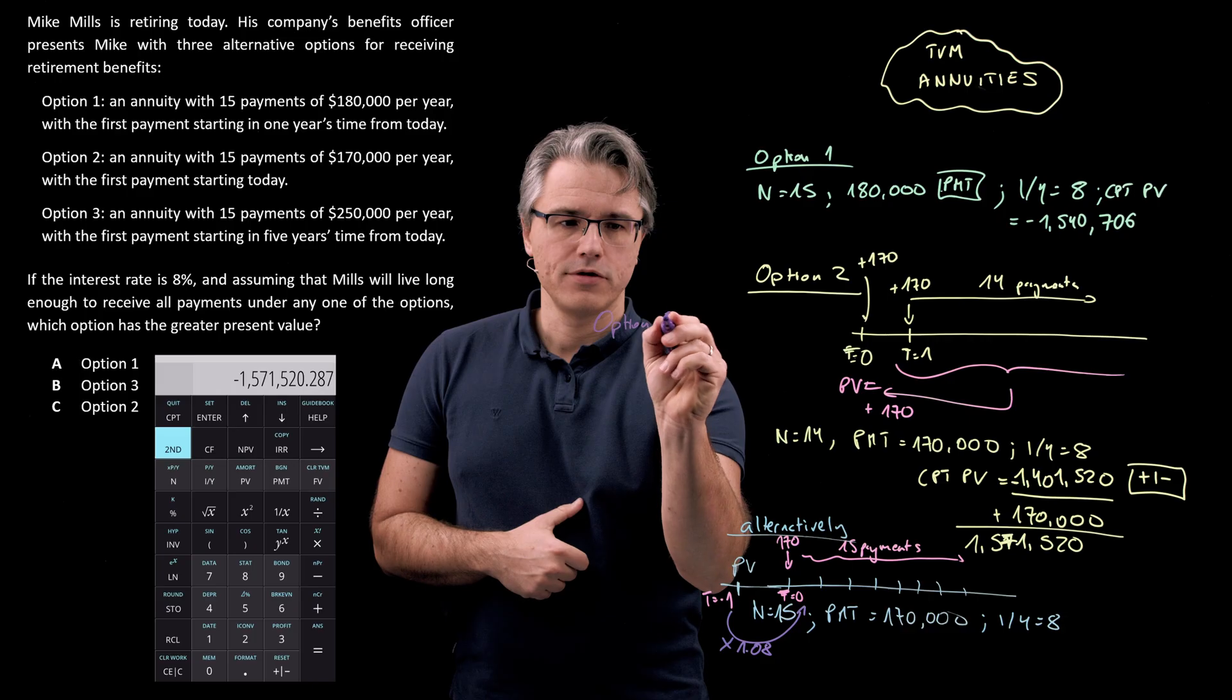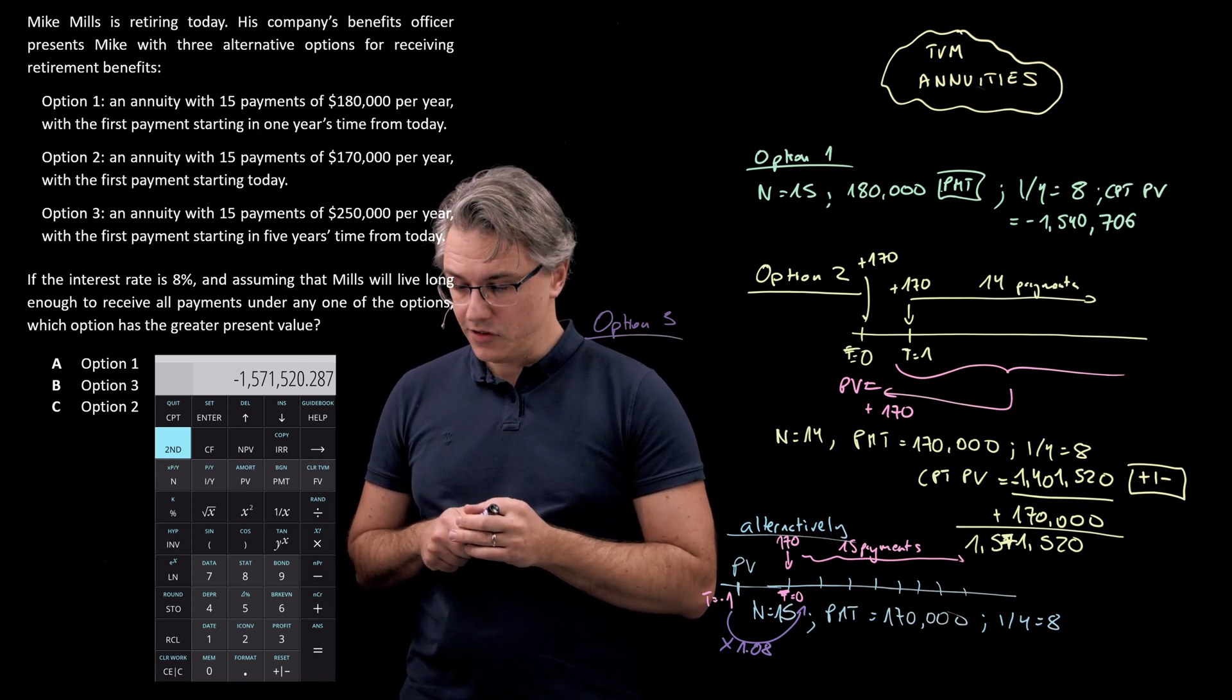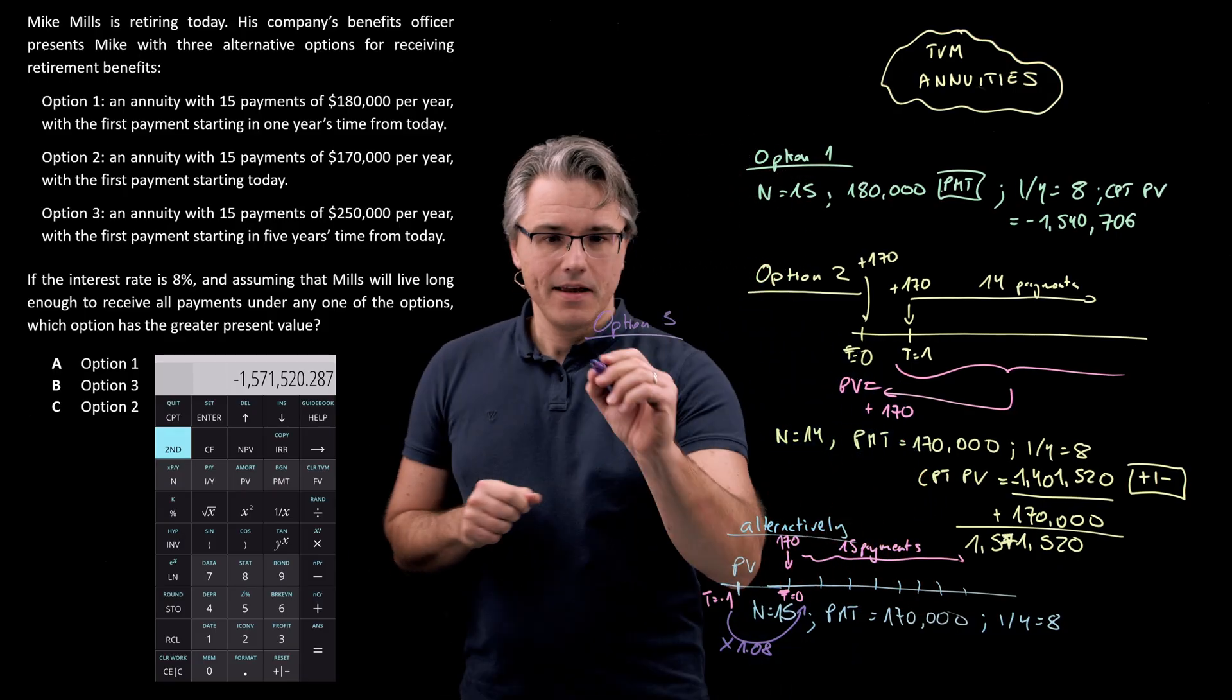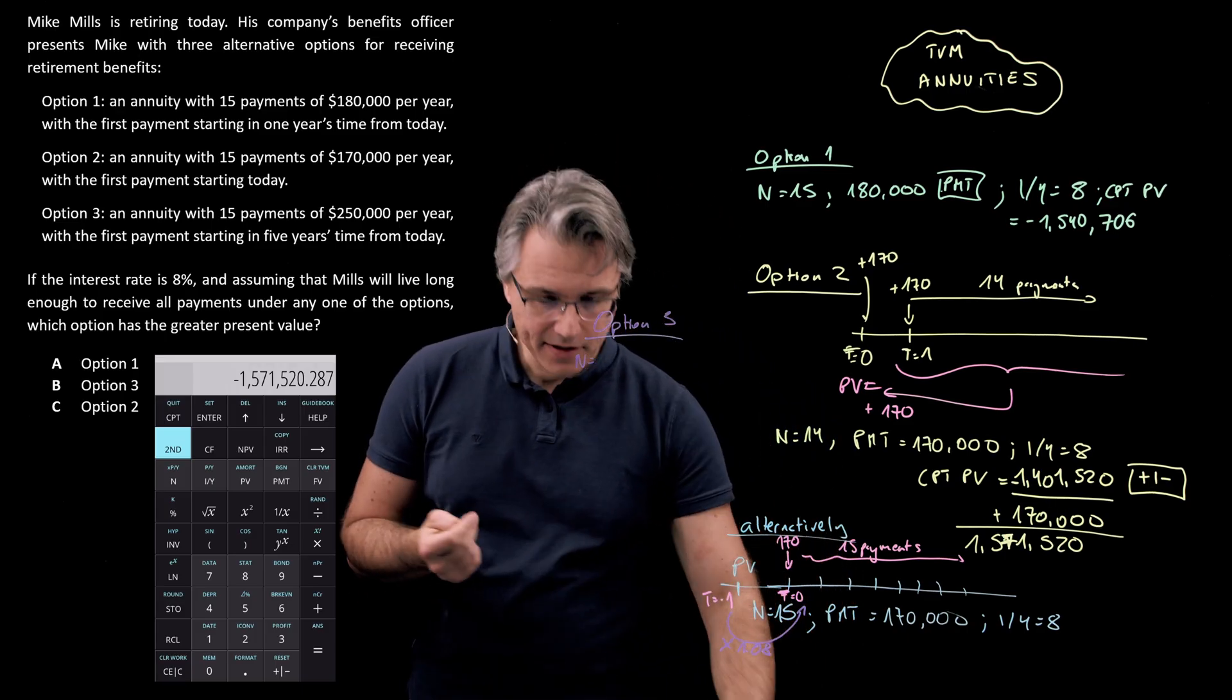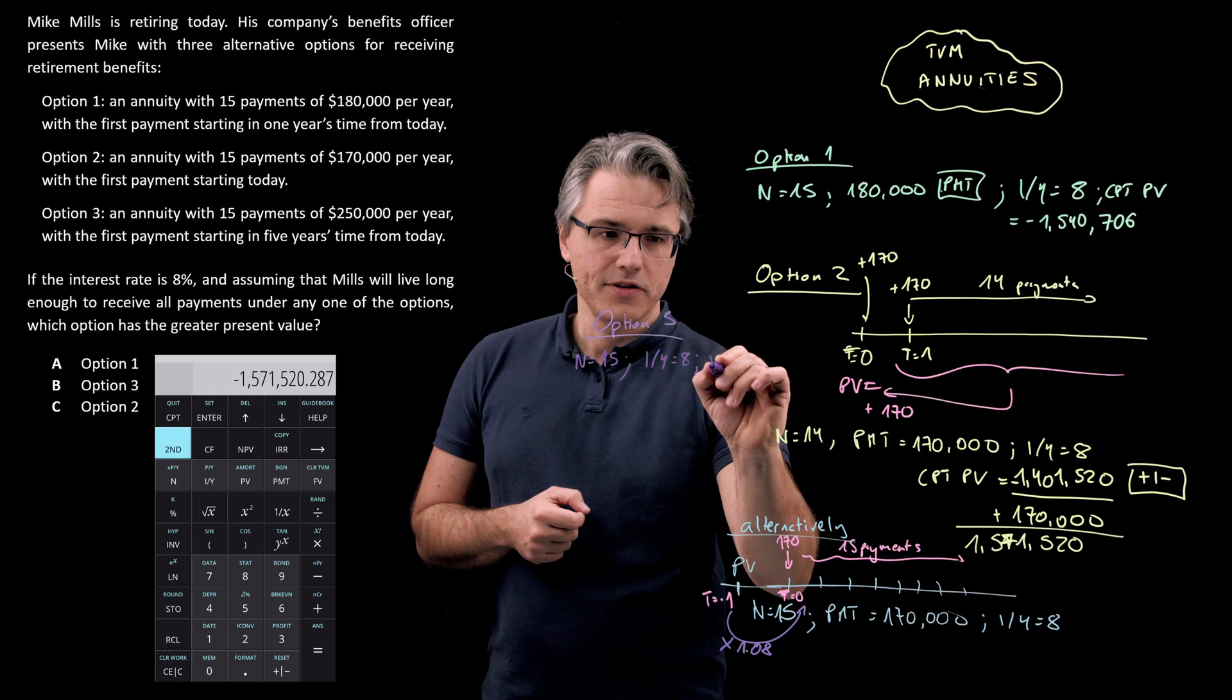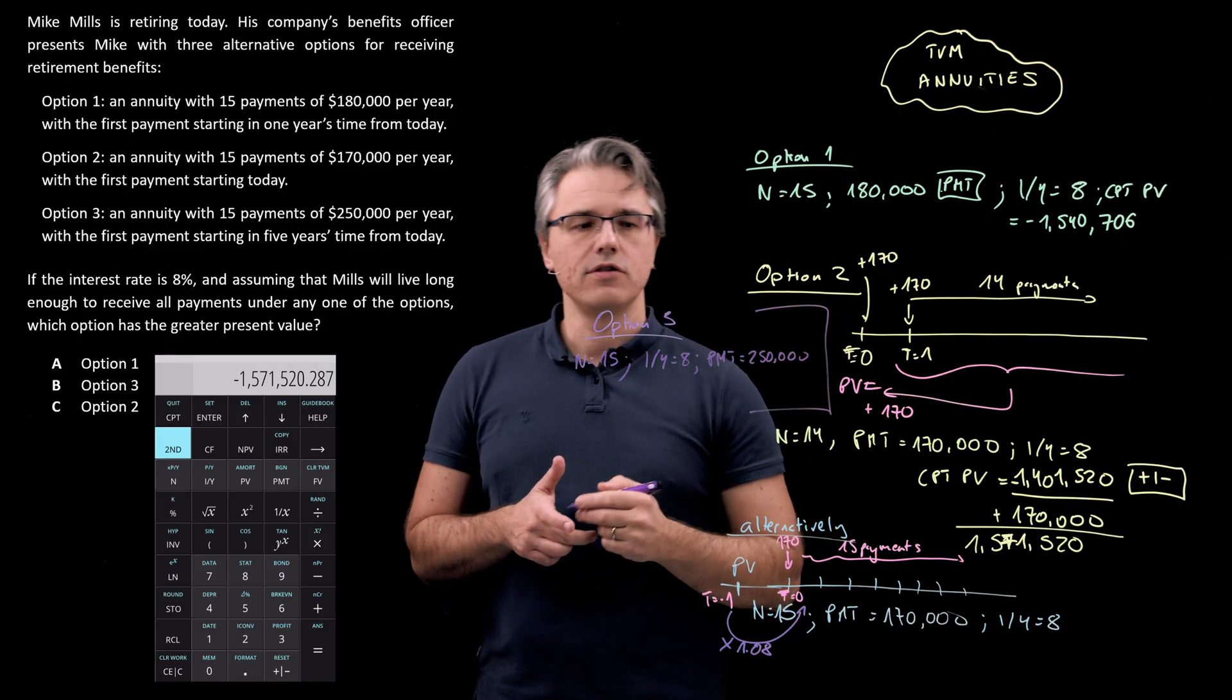So now it's time for option three. And with option three, we're looking at once again 15 payments, this time of $250,000 each, but the first one starting in five years time. So N equal to 15, I over Y is 8, and obviously the size of each payment is $250,000.